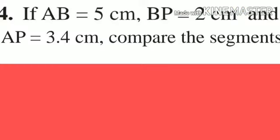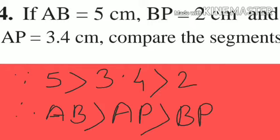Question number 4 is: if AB is 5 cm, BP is 2 cm, and AP is 3.4 cm, compare the segments. Compare means you have to decide the greater and smaller segments. Observing the values: AB is 5, BP is 2, and AP is 3.4.